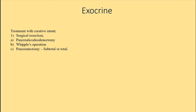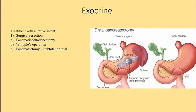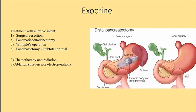For treatment with curative intent, surgical resection options include pancreaticoduodenectomy — also known as the Whipple's operation — and pancreatectomy, which can be subtotal or total. Pancreatectomy is usually used for resection of the body and tail, while the Whipple's procedure is used for the head. Chemotherapy, radiation, and ablation are also helpful adjuncts.